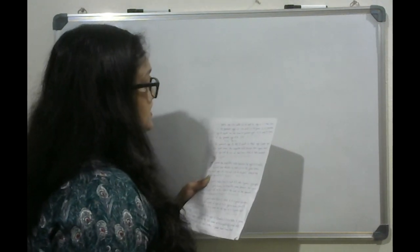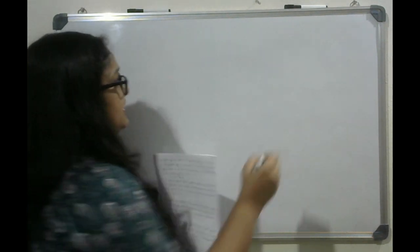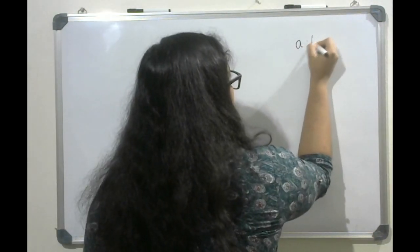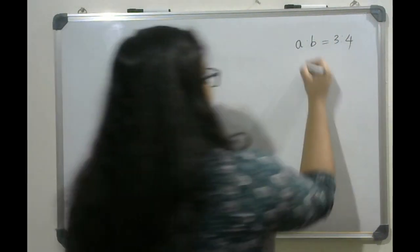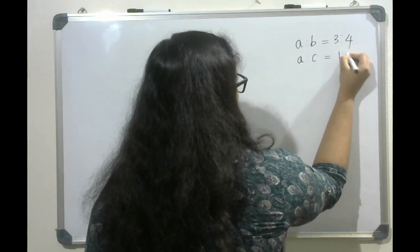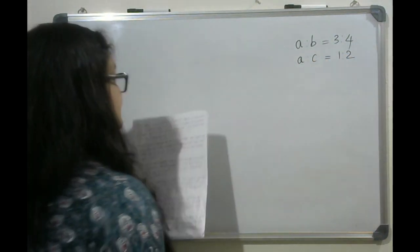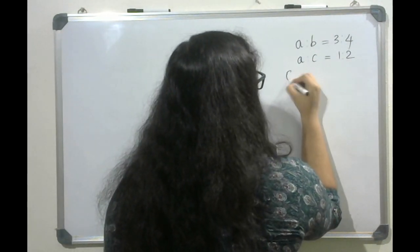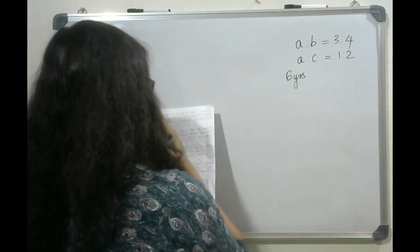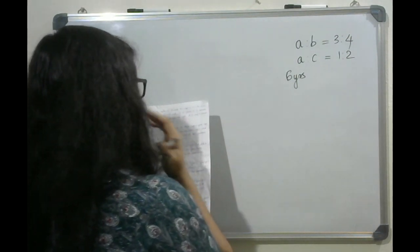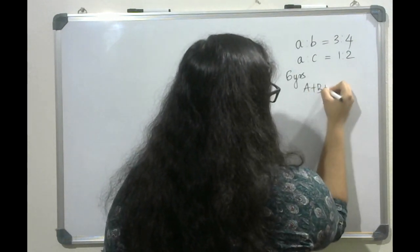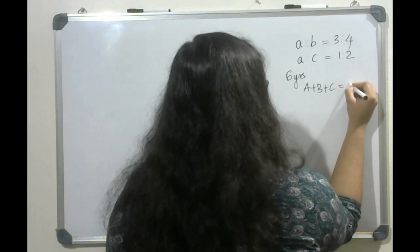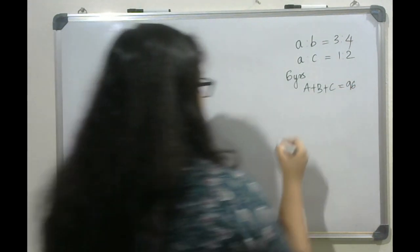Moving on to the next question. At present, the respective ratio between the ages of A and B is 3 is to 4, and between A and C is 1 is to 2. 6 years hence, the sum of ages of A, B and C will be 96 years.